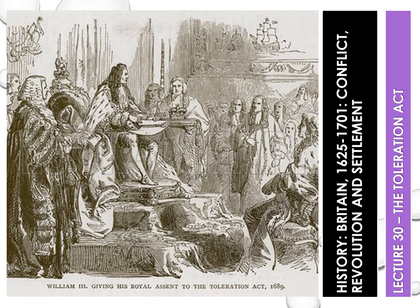Influenced by John Locke's A Letter Concerning Toleration from 1689, which favoured toleration, there was suspicion from the Anglican Church and confrontation from the Tories who believed William wanted to impose his Calvinist beliefs. The terms of the Act meant dissenters were exempt from punishment as long as they took an oath of allegiance to the crown, accepting they could not enter public employment unless they swore loyalty to the Anglican Church.